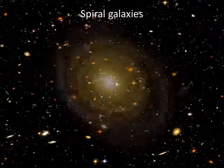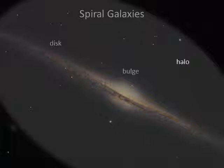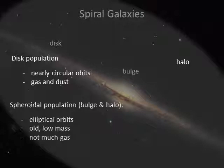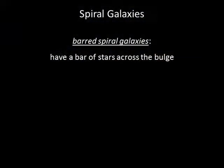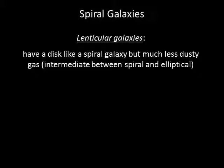Spiral galaxies have a thin disk that extends outward from a central bulge. The bulge merges smoothly into a halo that can extend to a radius of more than a hundred thousand light years. Spiral galaxies have two distinct populations: the disk population, which includes stars of all ages and masses that orbit in the disk of the galaxy, and the spheroidal population, which consists of the halo and bulge stars. Some spiral galaxies appear to have a straight bar of stars cutting across the center — these are known as barred spiral galaxies. Astronomers suspect the Milky Way is a barred spiral because our galaxy's bulge appears to be somewhat elongated. Lenticular galaxies have a disk like a spiral galaxy but have much less dusty gas; they are intermediate between spiral and elliptical galaxy types.